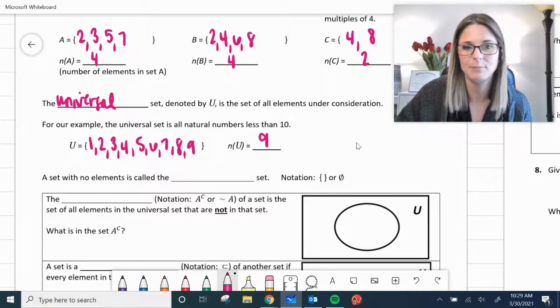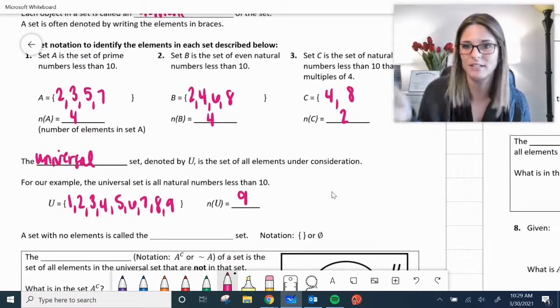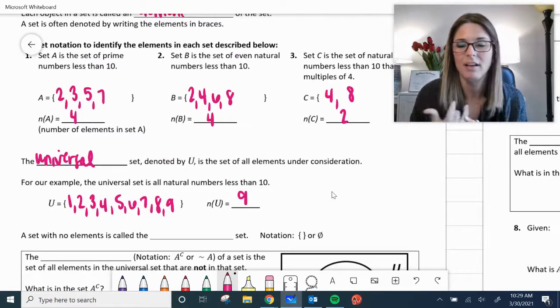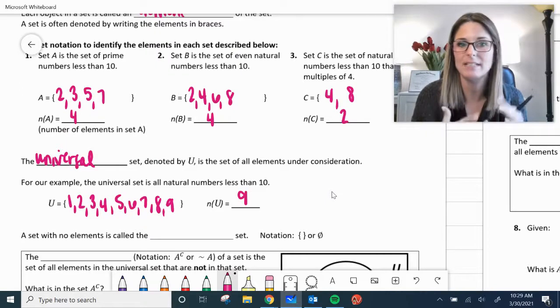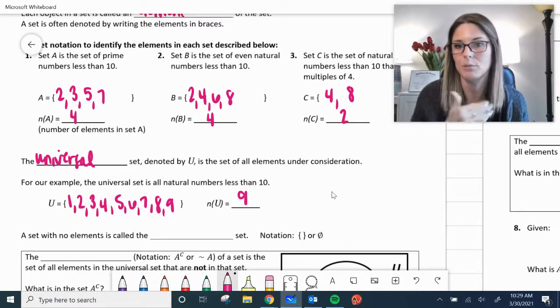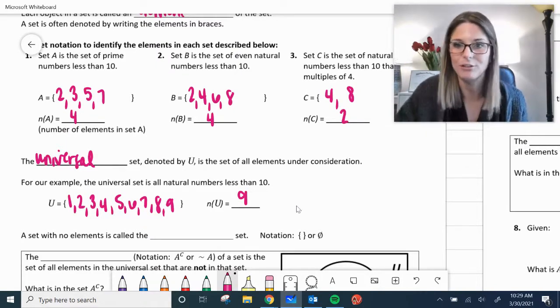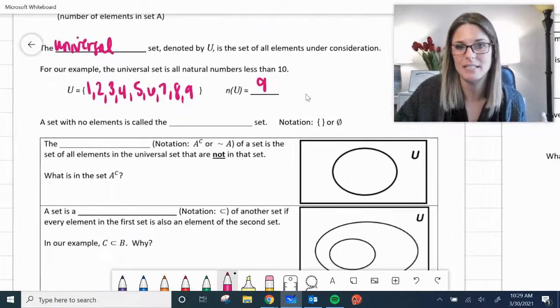So look back up at our examples if you need to. All of the different scenarios had to do with natural numbers less than 10. A was just prime, B was even, and C was multiples of 4. But still in the universal set of numbers less than 10.